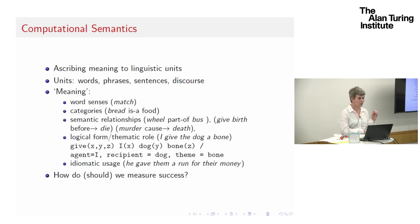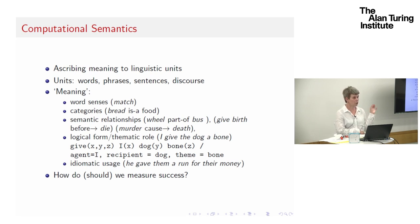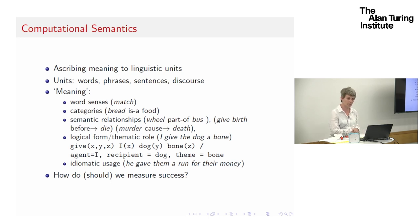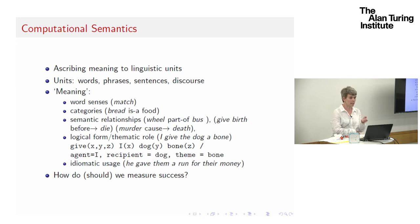We might also be interested in categories and semantic relationships, like 'bread is a food.' We might be interested in different types of semantic relationships not just at the word level, but between different words — so 'bread is a food,' 'a wheel is part of a bus,' a 'precedes' temporal relationship with give birth and die, or causal relationships such as 'murder causes death.' There's also a large body of research interested in building a representation of meaning at a phrase or sentence level.